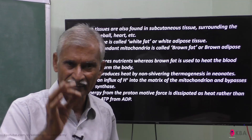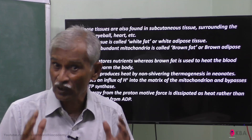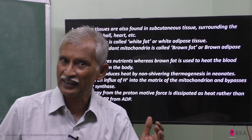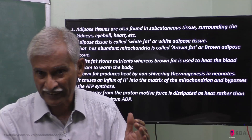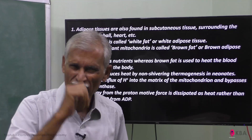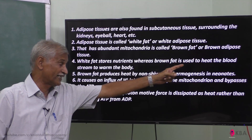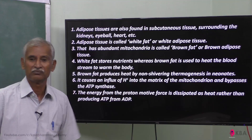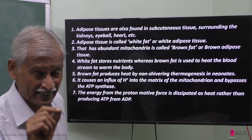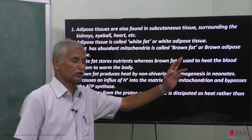In the mitochondria — we know that the mitochondria is the powerhouse, the energy producer. The energy produced is ATP — adenosine triphosphate — converted from ADP — adenosine diphosphate. Brown fat has excess mitochondria. Brown fat produces heat by non-shivering thermogenesis, particularly in neonates.